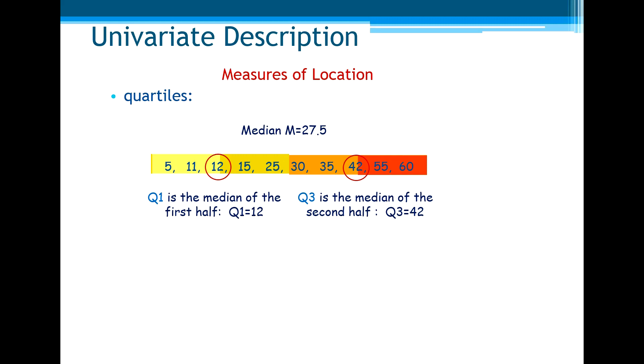With a large set of data, the difference between the methods to calculate quartiles tend to be insignificant. So in short, we say that the first quartile corresponds to a cumulative frequency of 25%, the third corresponds to a cumulative frequency of 75%, and the median is equal to the second quartile.